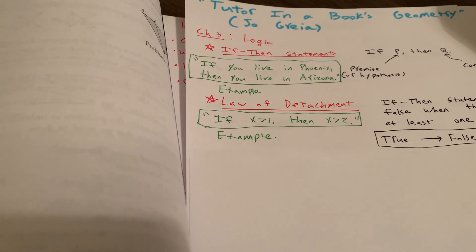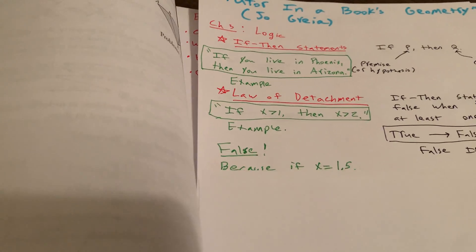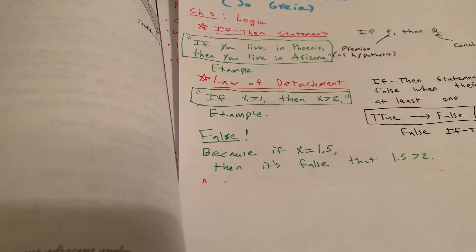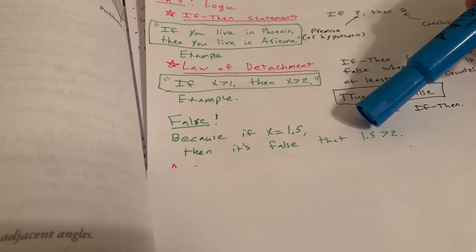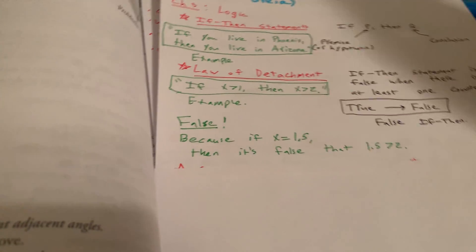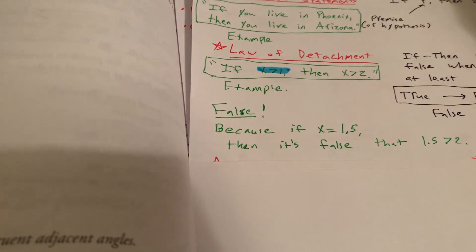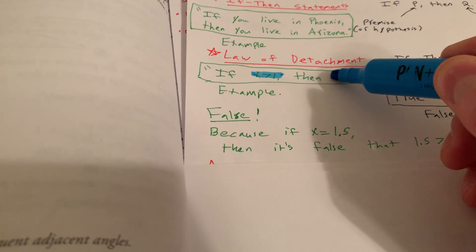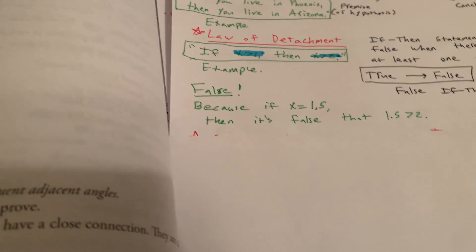Well, we can think of one counterexample. For example, what if X is 1.5? Well, then it's false because it's not the case that 1.5 is greater than 2. So while 1.5 satisfies this antecedent or that hypothesis, it's false for that conclusion. So we have a false conditional.